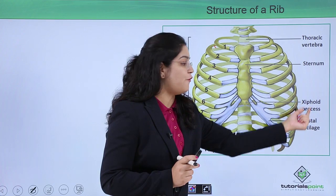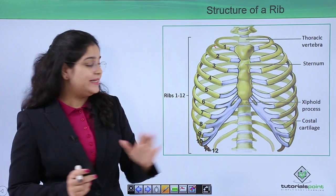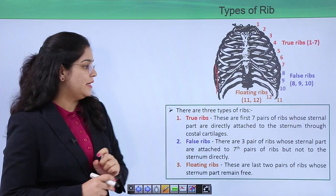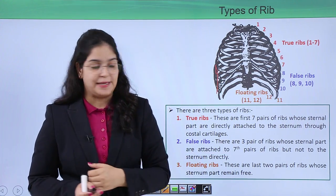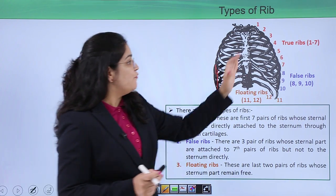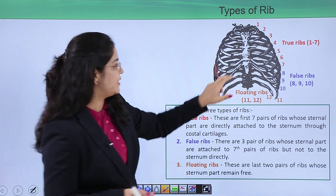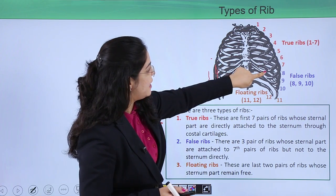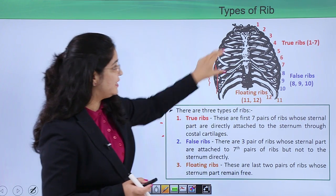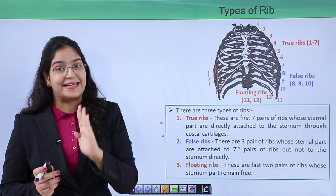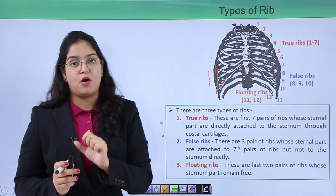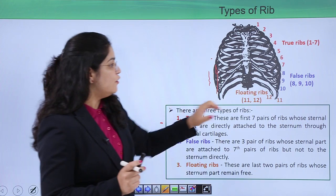Below the sternum there is a part called the xiphoid process. Now let's divide our ribs based on their connection to the sternum. Ribs are of three types: true ribs, false ribs, and floating ribs. True ribs are those directly connected to the sternum — that is ribs one through seven, which connect directly to the sternum through the costal cartilage.